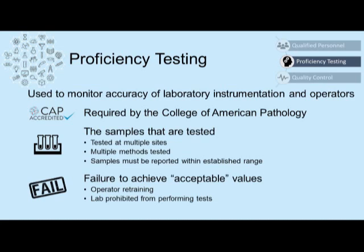Proficiency testing is used to monitor the accuracy of laboratory instrumentation and the operators performing the test. The College of American Pathology requires CAP samples to be tested at multiple sites using multiple different testing methods, and for CAP samples to be reported within an established range. If a clinical laboratory fails to report CAP samples within an acceptable range, the operator performing that test could be required to be retrained. Or, if it's severe enough, the lab where the CAP sample is performed can be prohibited from performing those tests in the future.